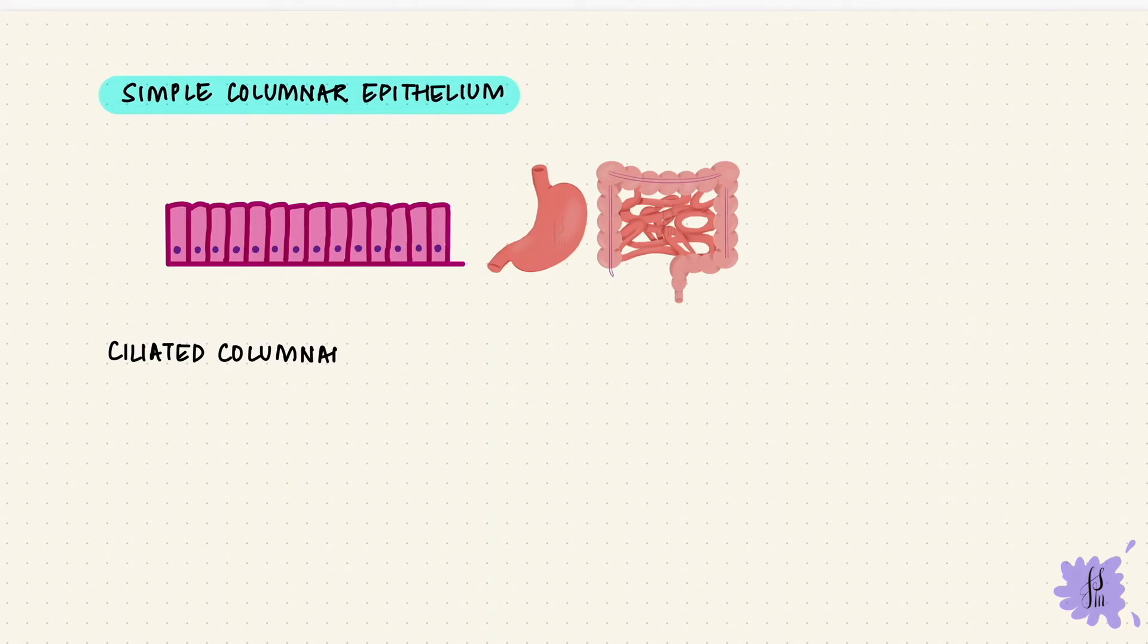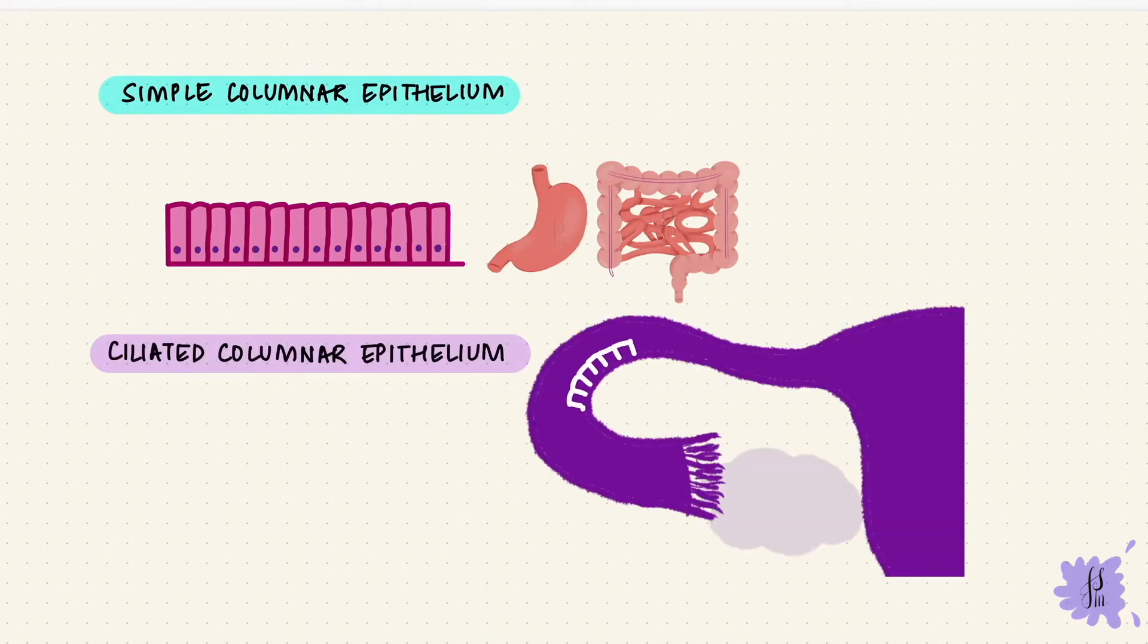But ciliated columnar cells, they have those cilia on the apical surface. And these cilia, what do they do? They can move things along the passage. So they line structures like the fallopian tubes to move the ova towards the uterus.